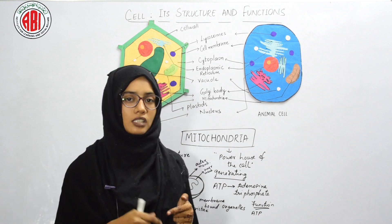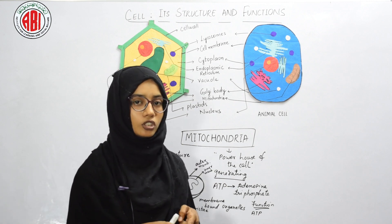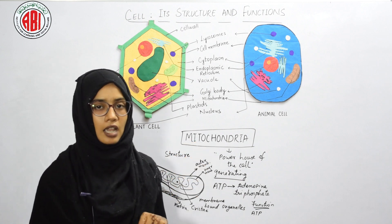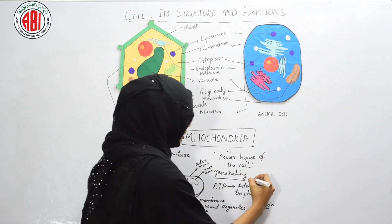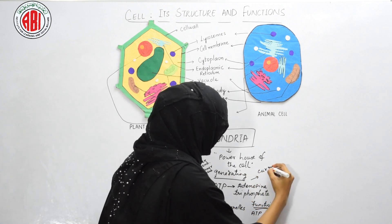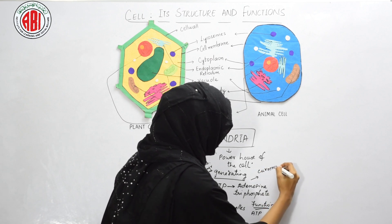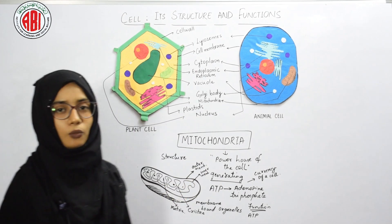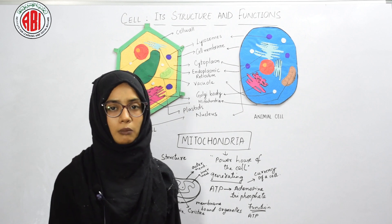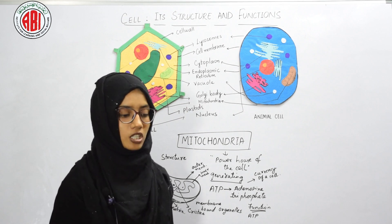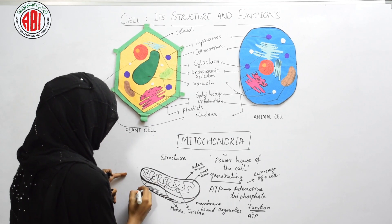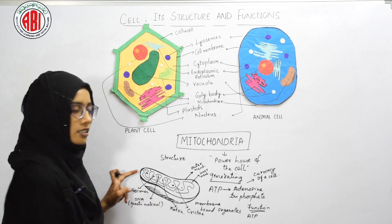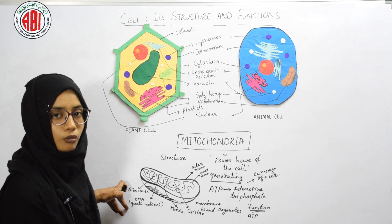The function of mitochondria is to generate ATP — food is converted into energy, and that conversion takes place in the mitochondria. Therefore it is known as the powerhouse of the cell, and ATP is known as the currency of the cell because it is required for physical and chemical activities. Mitochondria may be oval, cylindrical, spherical, or comma-shaped, and it shows distinct features like its own ribosomes and its own DNA, so it can synthesize its own proteins.